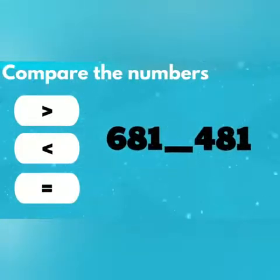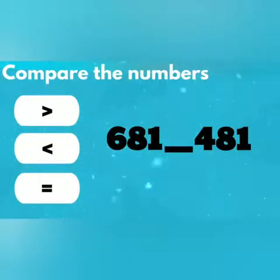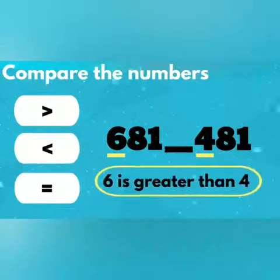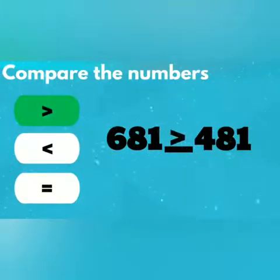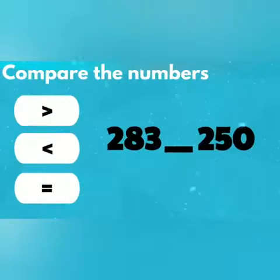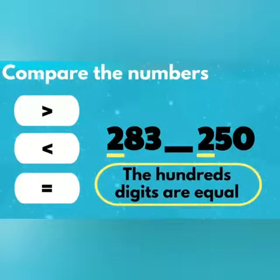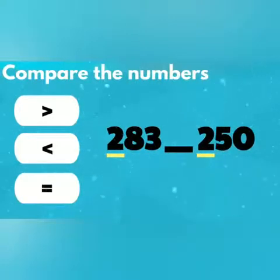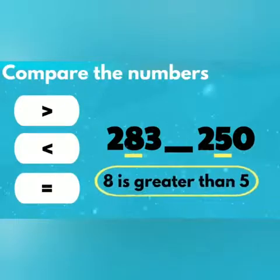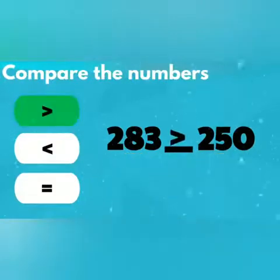Number 3: 681 and 481. In the hundreds place, 6 is greater than 4, so the answer is greater than. Number 4: 283 and 250. The digits are equal in the hundreds place, so we move to the tens place. 8 is greater than 5, so the answer is greater than — 283 is greater than 250.